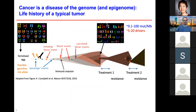Cancer is a disease of the genome and the epigenome. We all start from a fertilized egg with potential germline risk alleles for developing cancer. As cells divide, they accumulate DNA damage. A lot of the damage is repaired by repair mechanisms, but some damage stays as mutations in the genome. Most mutations don't do anything, but some could increase the fitness of cells, causing them to grow faster or die slower and accumulate into a clone.